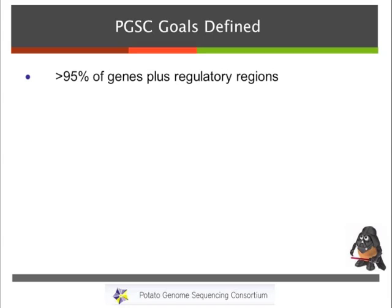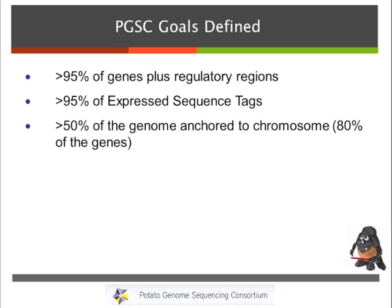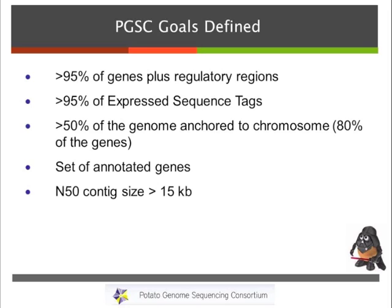We set out with some goals — and I want you to understand this is a draft assembly, so there are missing genes and some assembly issues. Our initial goals were that we wanted at least 95% of genes captured in the assembly, including regulatory regions. We would assess this by checking how many Sanger expressed sequence tags already in the public database were present in the assembly — targeting 95% of those. We also wanted these anchored to chromosomes, with at least half the genome anchored, representing 80% of genes. We wanted to annotate the genome for genes, and we wanted an N50 contig size of 15 kilobases — meaning half of the bases would be found in contigs of at least 15 kb.